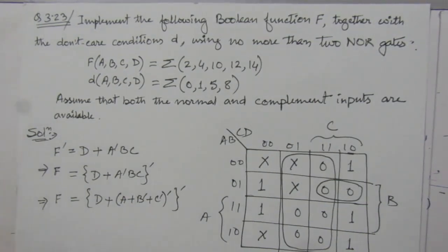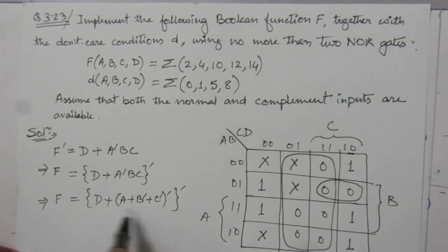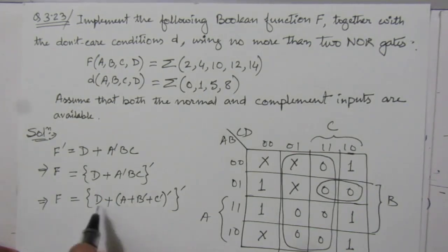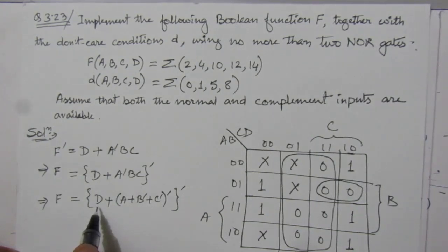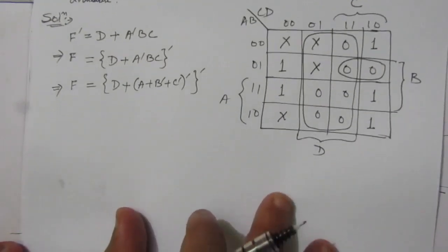Now we can use NOR gates. In the question, we are given that we can use any input NOR gate. We can have as many number of inputs, but we can use only two numbers of NOR gates. So here, for this term, we will use a three-input NOR gate, and this will be added to D. And we have complement, so we will have to use a NOR gate. Now let us make the logic diagram.